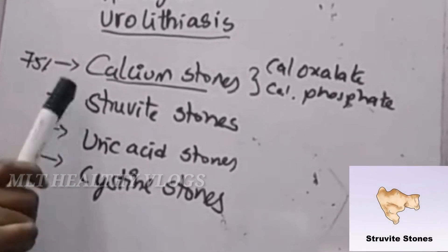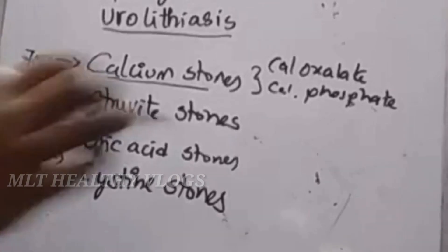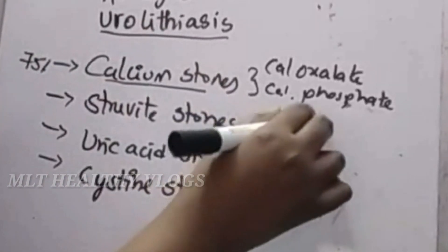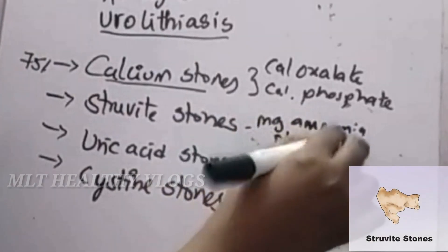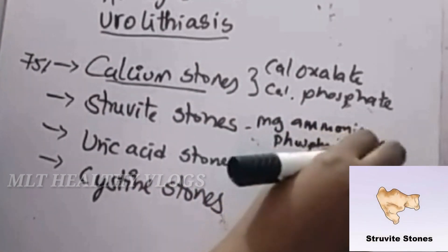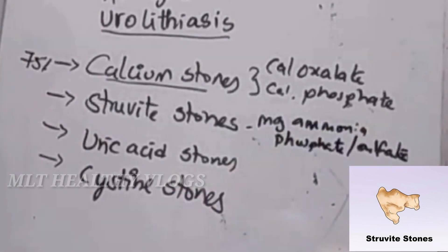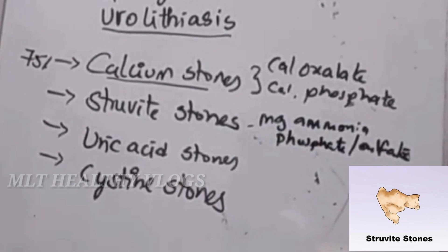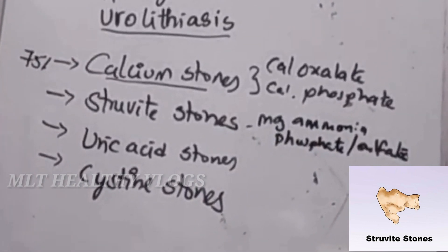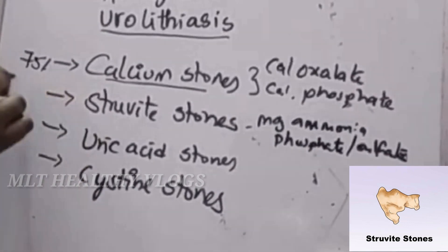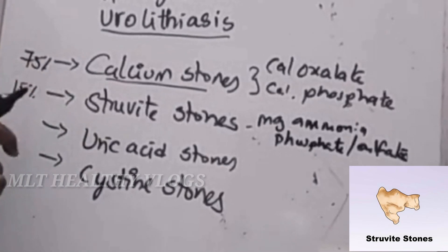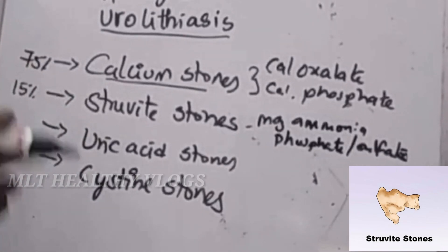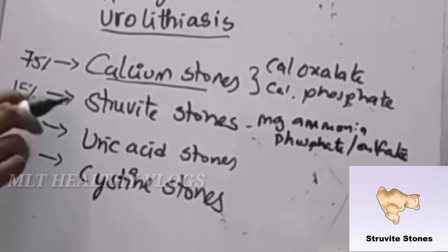Next, struvite stones are composed of magnesium, ammonia, and phosphate or sulfate. These stones are mainly associated with urinary tract infections and complications. In the population, 15% of these stones are formed. Struvite stones are deposited in alkaline urine.